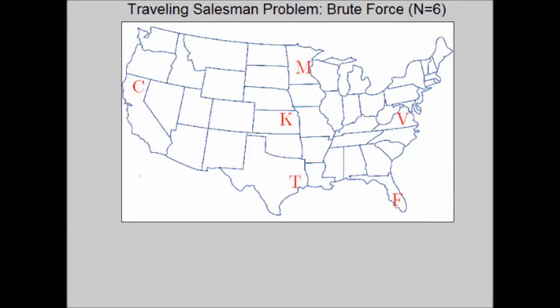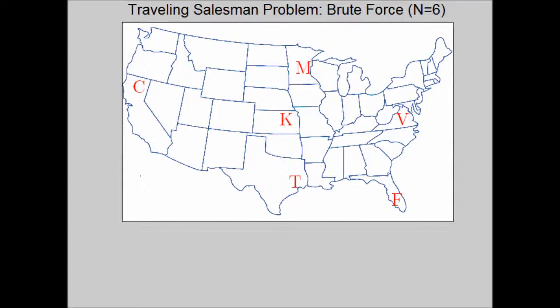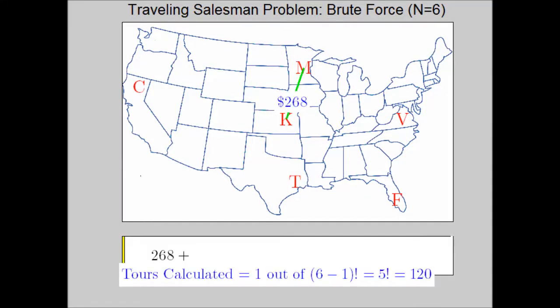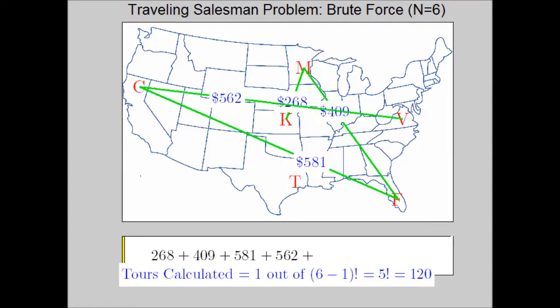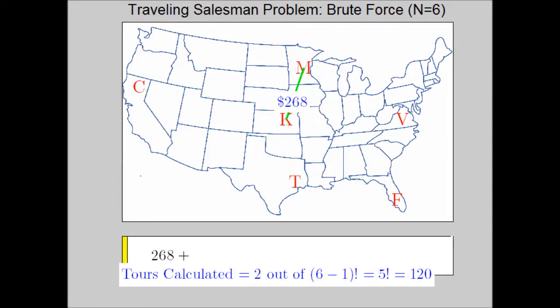The downside for the brute force algorithm is what happens when we increase the numbers of cities. So if I add a city here in Kansas, I go from 5 to 6 cities, look at the number of tours that we have to calculate. We went from only 24 all the way to 120, because 120 is 5 factorial.